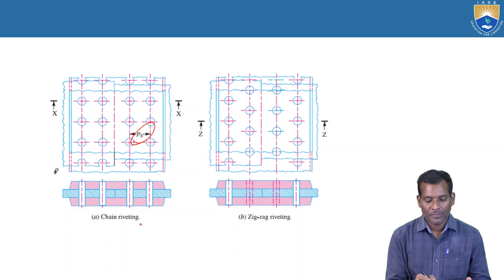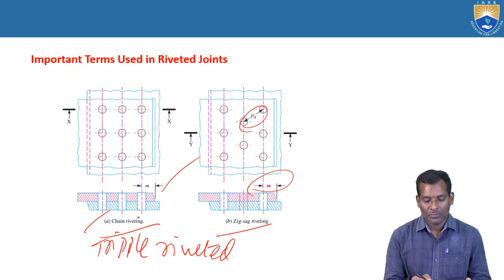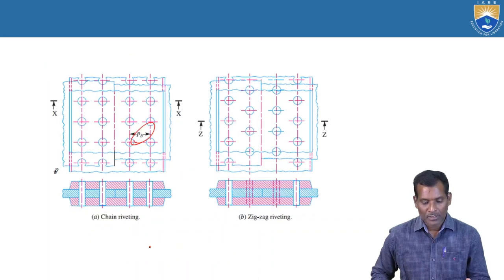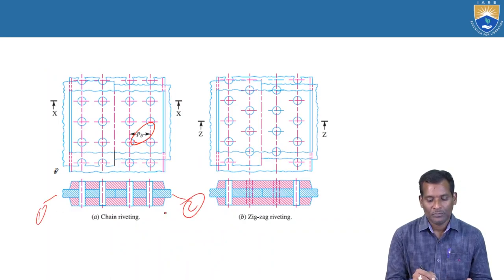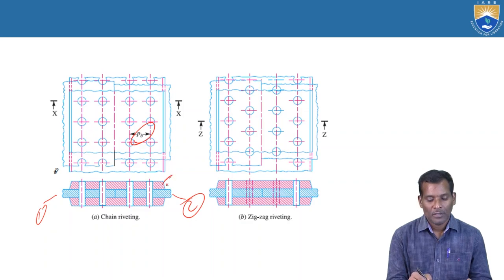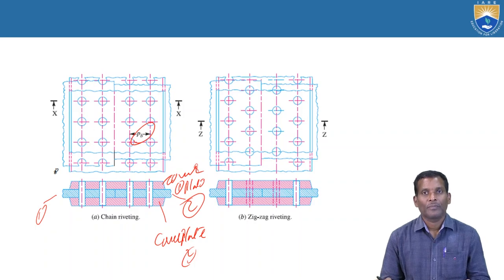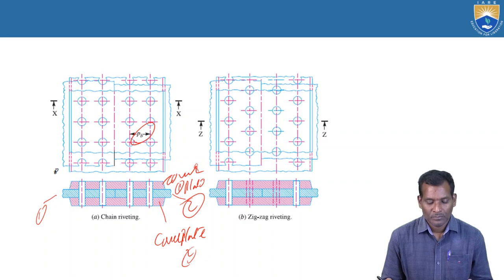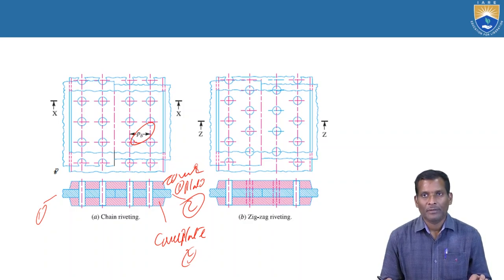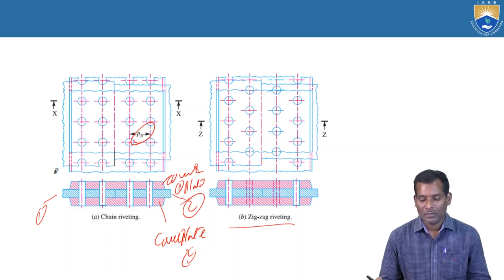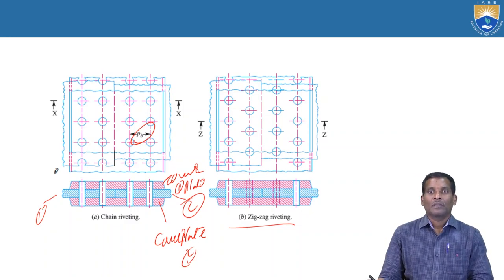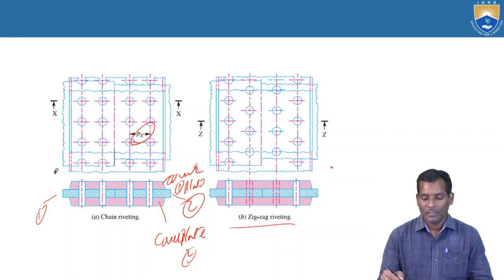This is not a lap joint — it is a butt joint. Here two plates, plate one and plate two, are joined with double cover plates: cover plate one and cover plate two (also called straps). This is a double riveted chain riveting butt joint. Similarly, in the zig-zag riveting diagram shown, the arrangement of rivets in this joint is zig-zag as shown.